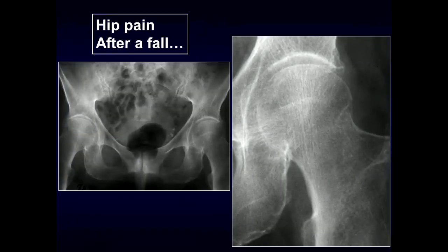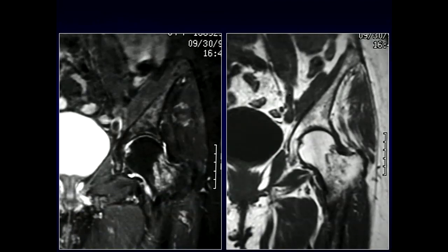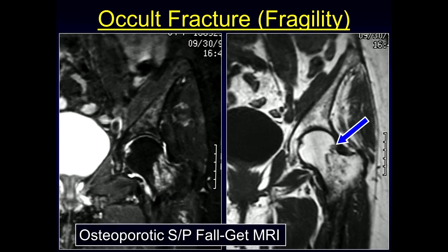A patient came into the emergency department with hip pain after a fall — oftentimes these patients are osteoporotic. Taking a close look at the femoral head-neck junction, there was some irregularity: could it be a fracture or just an osteophyte? The patient underwent MRI, which revealed an occult fragility fracture — they can be radiographically occult. The key is that patients coming in following a fall who are osteoporotic should proceed to MRI for further evaluation.